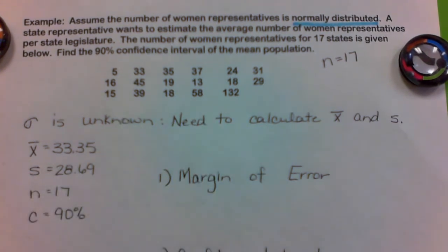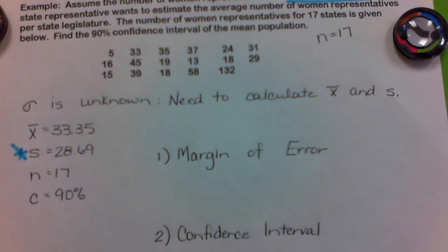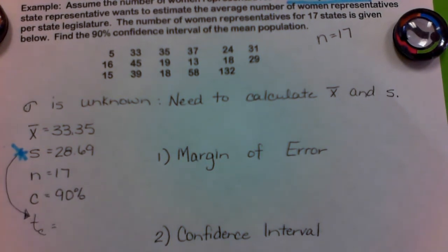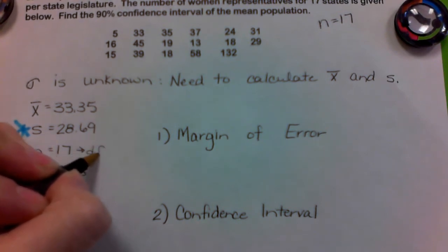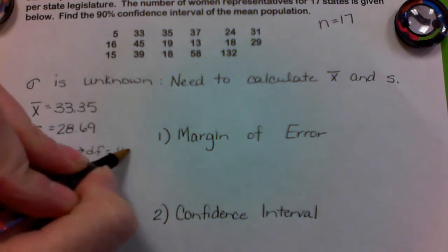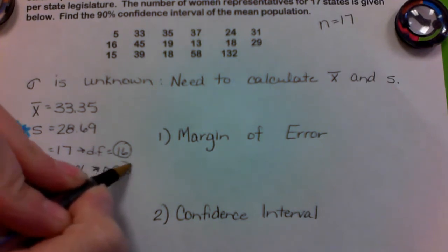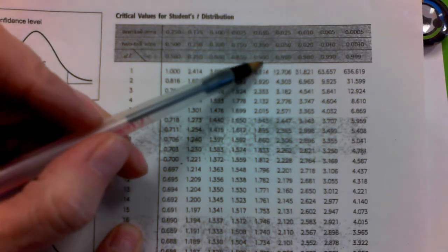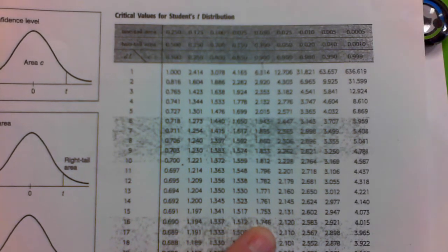The key here is that sigma is unknown, so my standard deviation is S, which means I will find T sub C from the Student's T distribution. I need the DF, which is N minus 1: 17 minus 1 is 16. The confidence 90% is 0.900. Looking at row 16 and column 0.900 — the 5th block — gives 1.746.